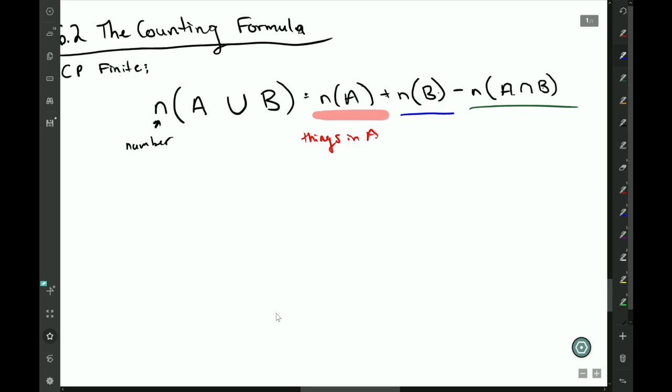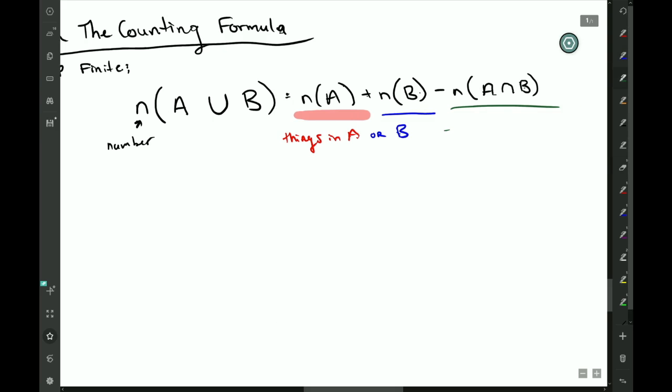Oftentimes it's easiest to look at an example. So an example here: let's just say our universe are the letters a, b, c, d, e, f, and g. That is the universe we are considering.